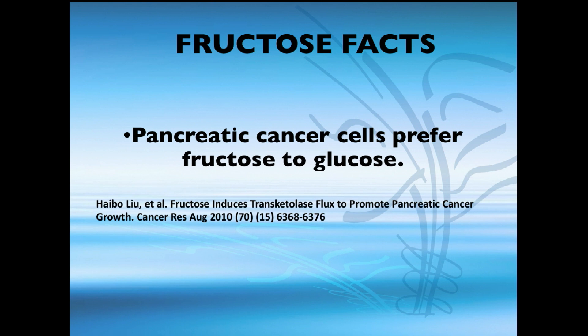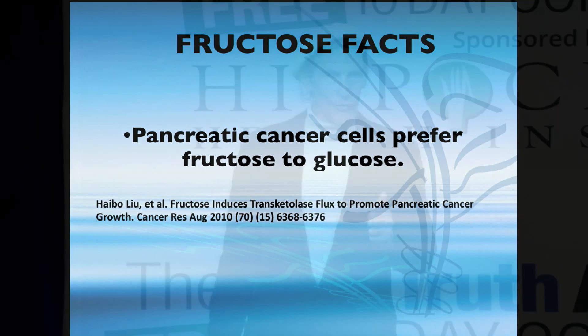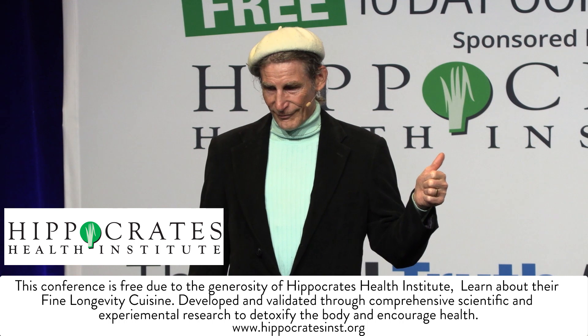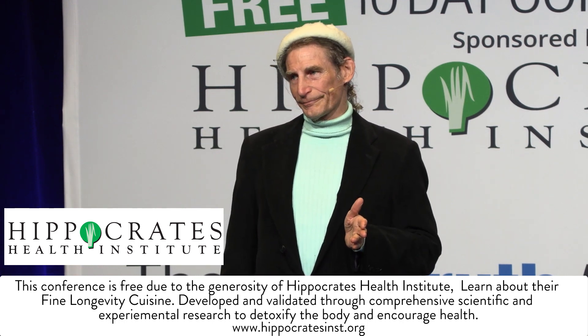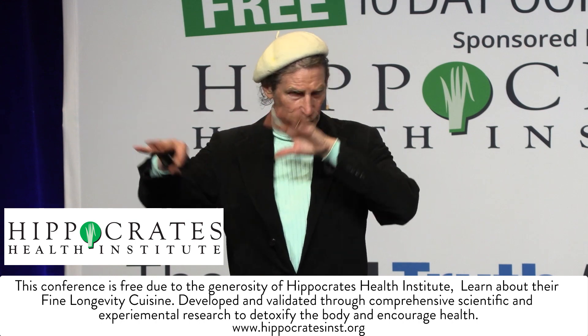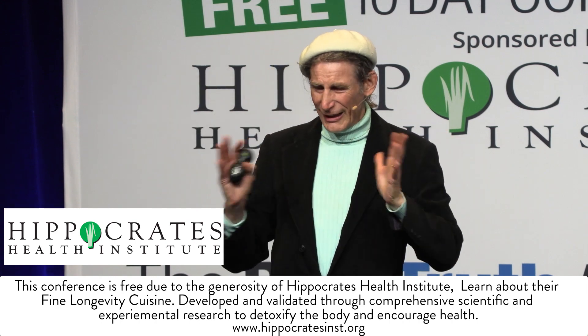Pancreatic cancer cells prefer fructose over glucose — cancer cells like fructose ten times more than glucose, and cancer cells like glucose ten times more than regular cells. Fructose also inflames the brain: the glial cells show ten times more inflammation, which increases brain inflammation and creates problems with memory and mental functioning.